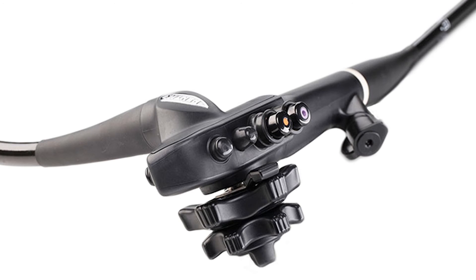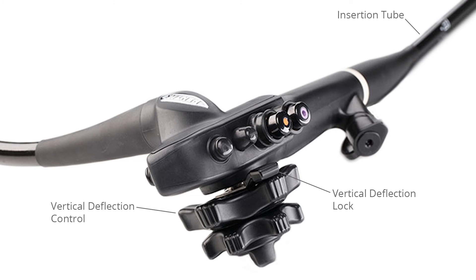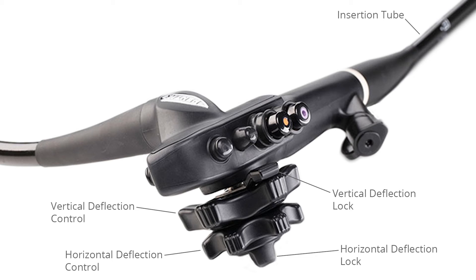Typical components at the proximal end include the insertion tube, which is the long flexible section of the endoscope that is not steerable. The vertical deflection control and lock allow the bending section to be steered up and down and locked in place. The horizontal deflection control and lock allow the bending section to be steered left and right and locked in place. There is also a working channel port and elevator control, which allows the angle of the elevator to be adjusted to set the angle at which instruments exit the working channel. This control is typically only found on certain types of ultrasound endoscopes.